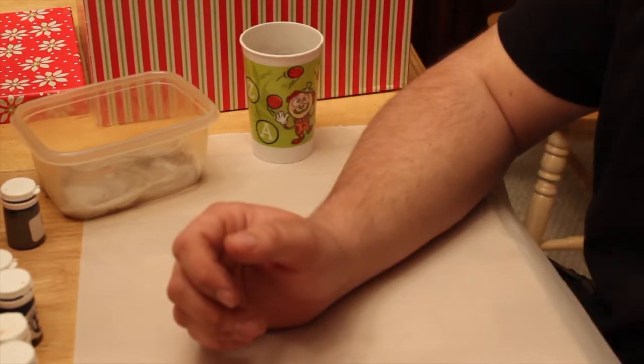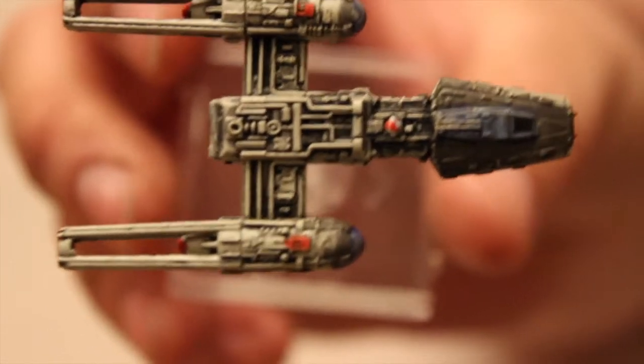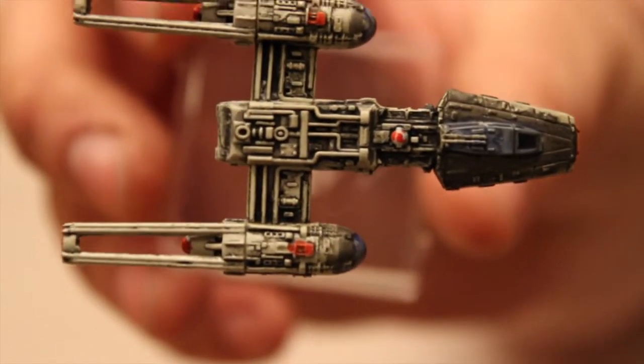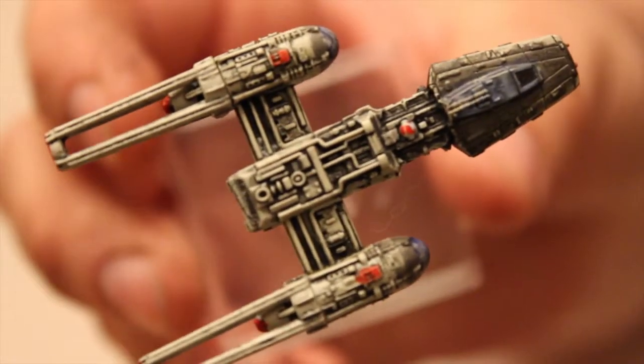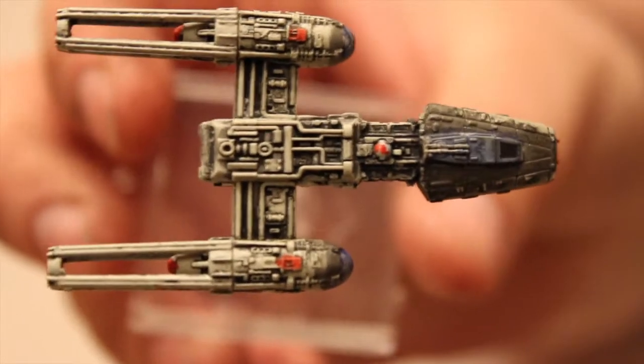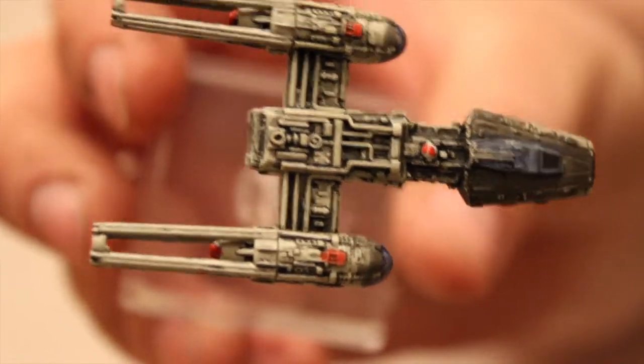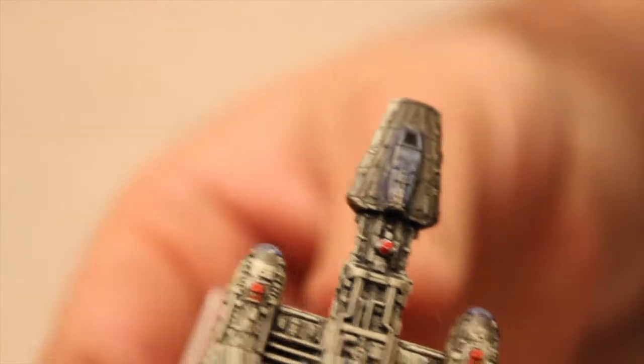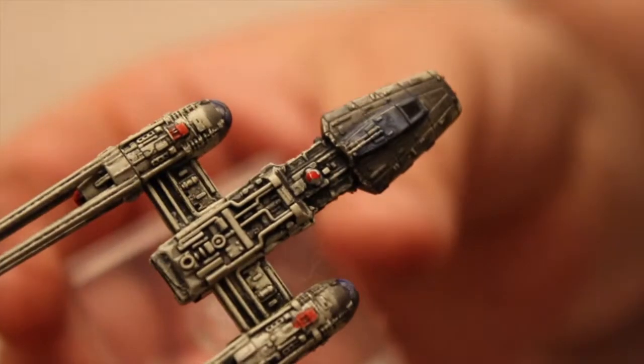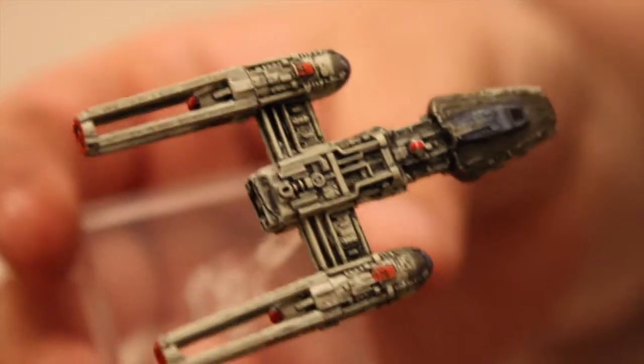So first up is this Y-Wing that I did. I made a Gray Squadron Y-Wing and gave a little bit of red paint for the R2 unit on the top. Gray Squadron is one of the popular squadrons, so I've started doing my Gray Squadron.